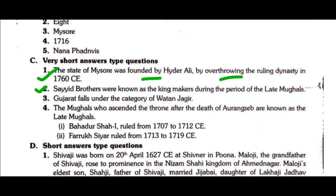Question number two: Who were known as the kingmakers during the period of the late Mughals? The Sayyid brothers were known as the kingmakers during the period of the late Mughals.